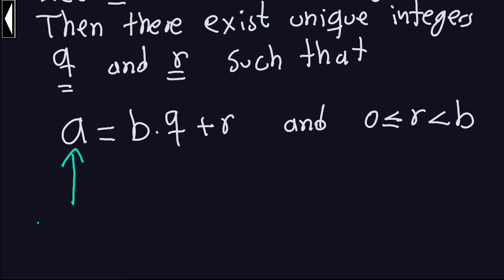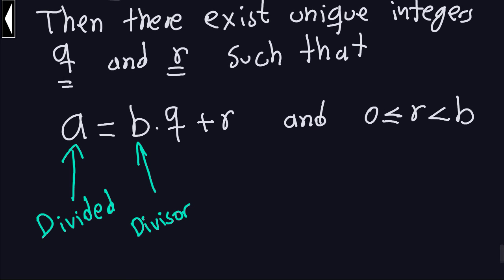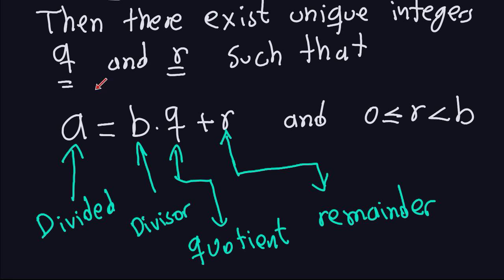In this expression, a is the dividend, b is the divisor — we are assuming we are dividing by a positive integer — q is the quotient of that division, and r is the remainder. That's something you already know from primary school, maybe not stated in exactly this way, but that's what the division algorithm actually says.